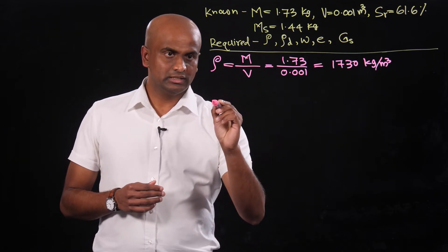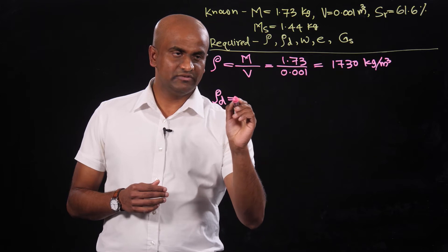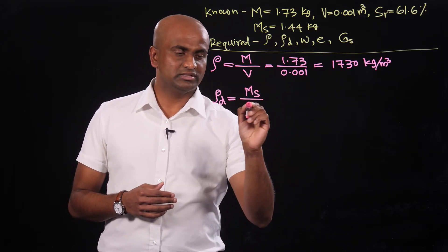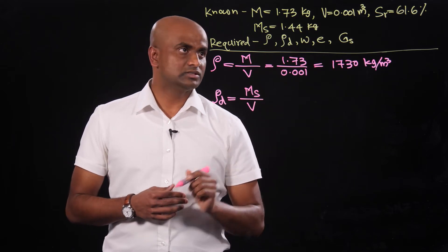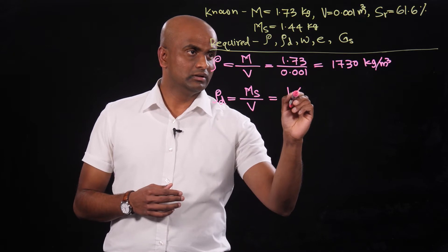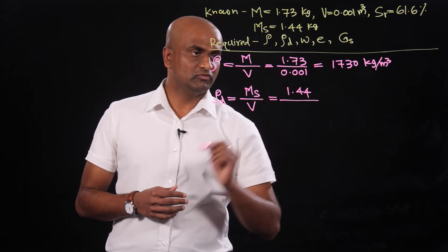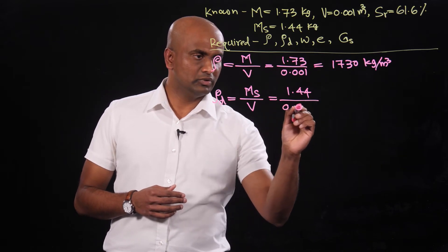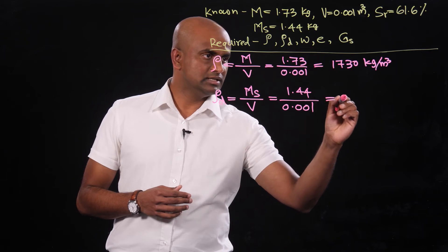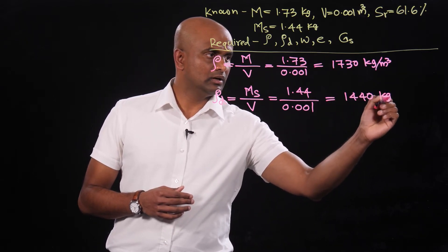The dry density can be determined next. Dry density is defined as the mass of solid divided by the total volume. The mass of solid is directly measured as 1.44 kilograms and the total volume is 0.001 cubic meters, giving a dry density of 1440 kilograms per cubic meter.